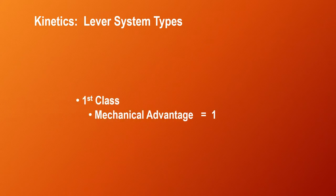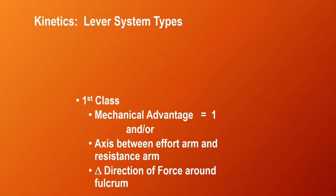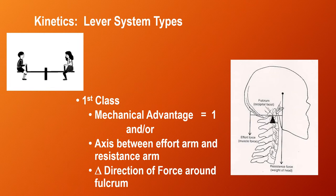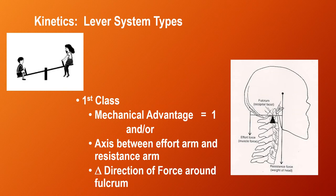The class one lever is where the mechanical advantage is either equal between the effort arm and the resistance arm, or the fulcrum is in between the two — both variations exist in the human body. In either case, the direction of force is changed around the fulcrum. An illustration of this is a seesaw. The most common example in the human body is how the skull rests upon the atlas, the first cervical vertebra. As the neck extensors pull down, it tilts the skull up.